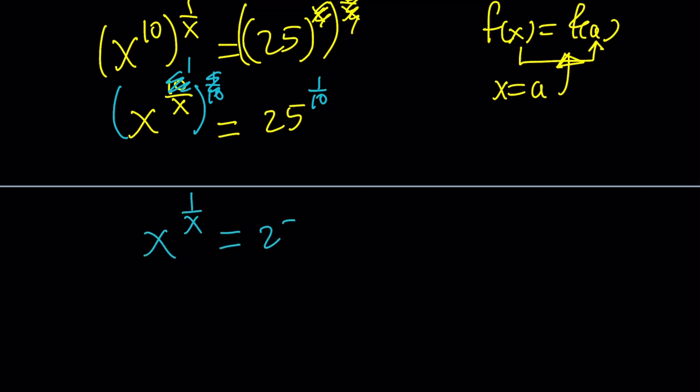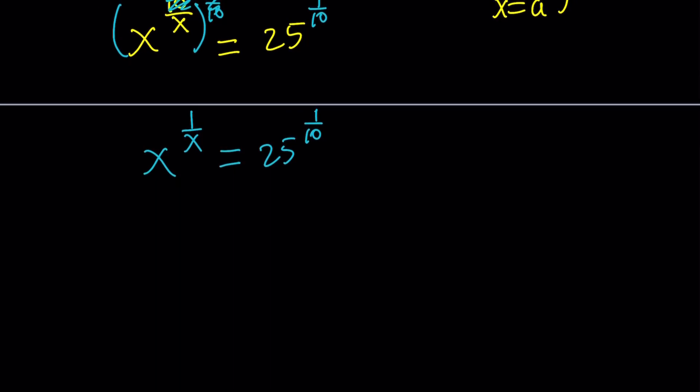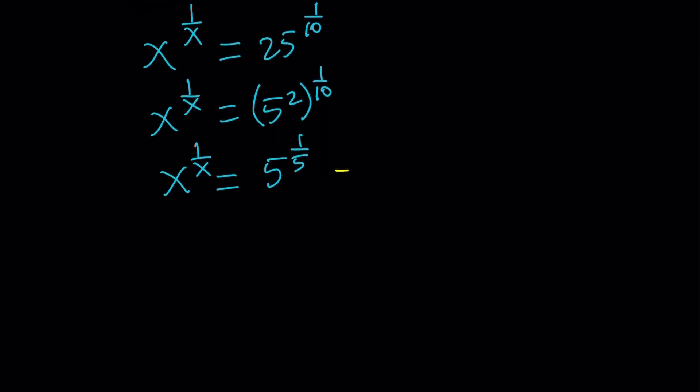This equals 25 to the power 1 over 10. I wasn't able to get f of a on the right-hand side, but I'm pretty close, because 25 is 5 squared. And then I raise it to the power 1 tenth, and that becomes 5 to the power 2 tenths, which is 5 to the power 1 over 5. Great. This is a really important point, because from here, we should be able to conclude that x equals 5 is a solution.